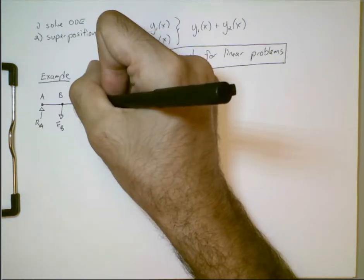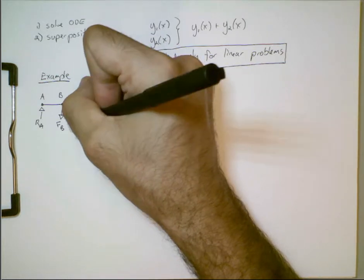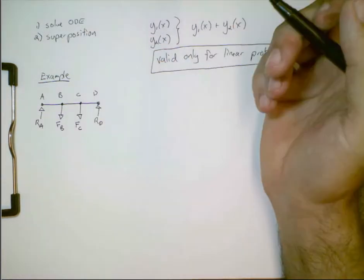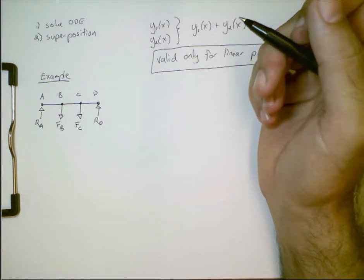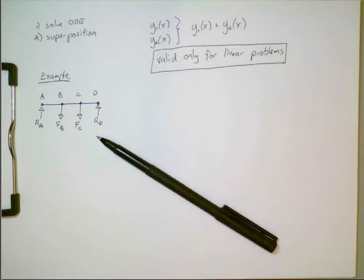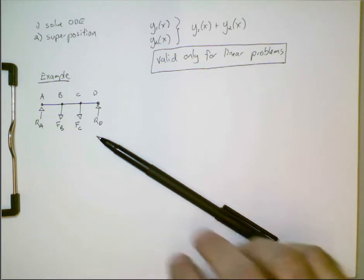So, let's suppose we have a load, maybe from a gear or a pulley, at B, and then also another load at C. So, we can decompose this into two problems. Let's say our particular table does not have this loading and boundary condition situation in the table, so we can't just look it up.